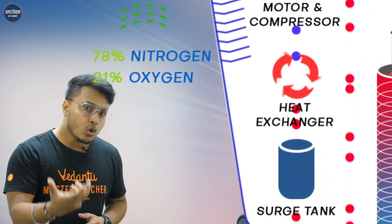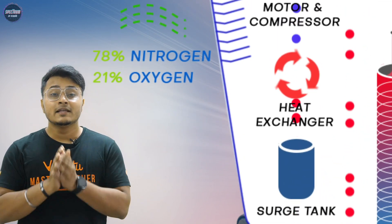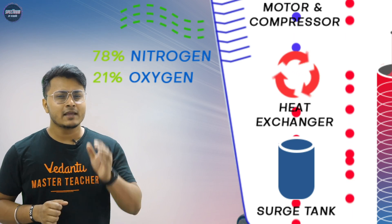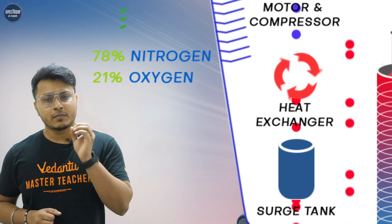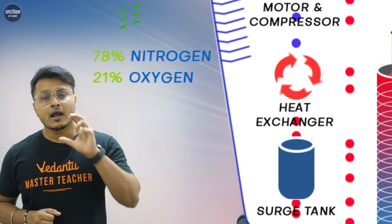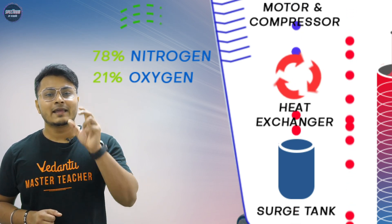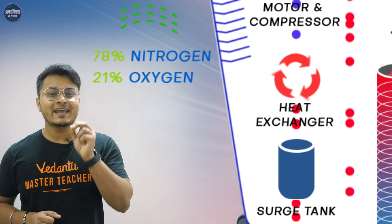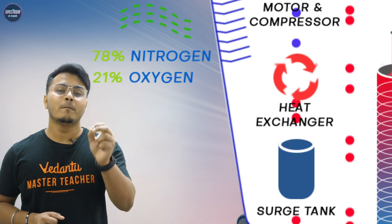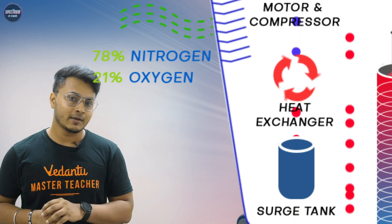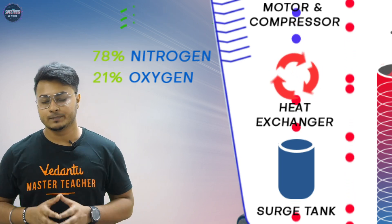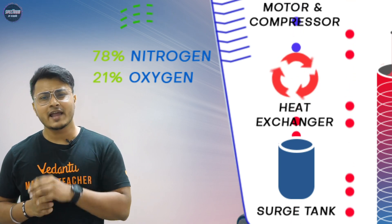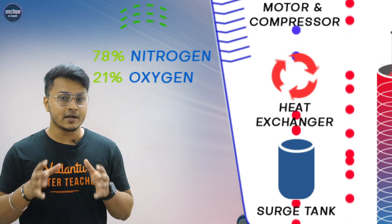Compression ke dauran air ka pressure aur temperature dono badhne lagte hain. Jiski wajah se is pressurized air ke temperature ko kam karne ke liye ise heat exchanger ke through pass kiya jaata hai, where the air cools down.